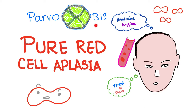The big hero here is Parvovirus B19. Symptoms of anemia are kind of the same. The main difference between aplastic anemia and pure red cell aplasia is whether there is pancytopenia or not. In aplastic anemia there was pancytopenia — all cell lines were involved. In pure red cell aplasia only the RBCs are affected; white blood cells and platelets are completely normal, so there is no pancytopenia.